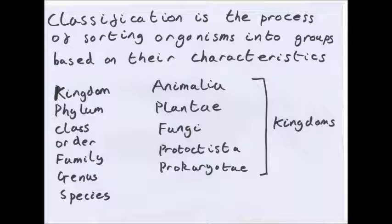For Animalia, organisms are multicellular and heterotrophic, which means that they do not produce their own food. They are feeders, so they don't have chlorophyll because they can't make their own food. They have no cell walls and they are complex cell structures — they have a nucleus.